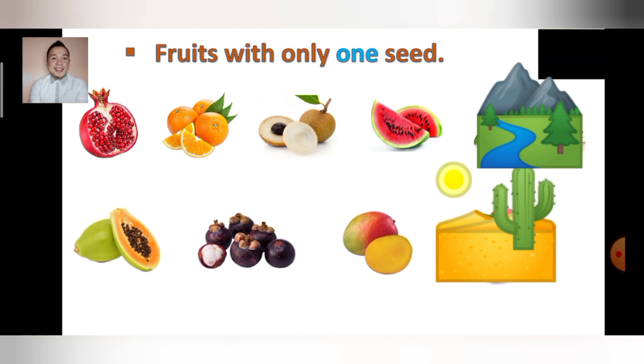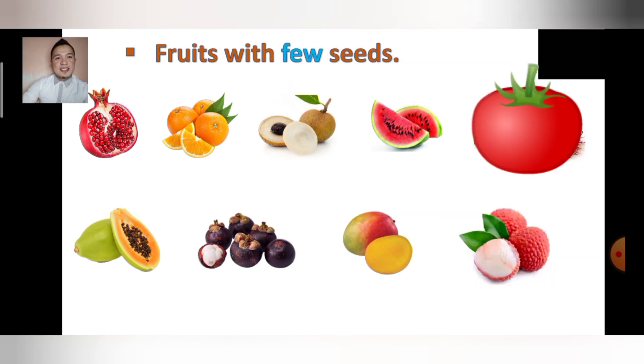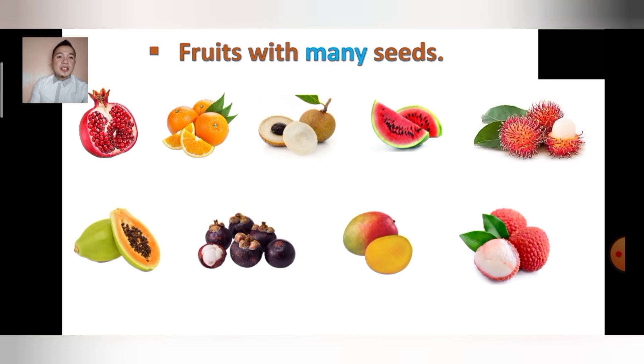Are you done? Let's find one and two. Next, fruits with few seeds. Ready, go. Five, four, three, two, one. You're going to choose the answer - one, two, and three. There are three answers.